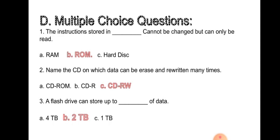Name the CD on which data can be erased and rewritten many times and the correct answer is CD-RW. Third point, a flash drive can store up to 2 TB of data. The options are given 4 TB, 2 TB, 1 TB and the correct answer is 2 TB.